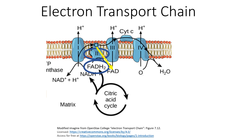This means coenzyme Q takes the two electrons from FADH2, then brings those electrons to complex three, and then the electrons travel down the electron transport chain in the exact same fashion as the electrons from NADH. The main difference here is that complex two doesn't pump hydrogen ions.